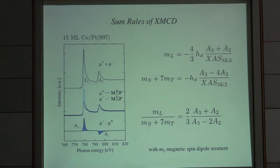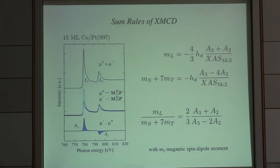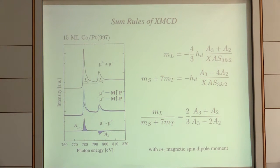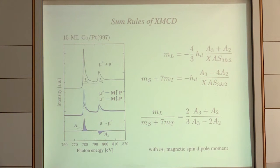If you have a theoretician who can calculate the number of d-holes, you have your orbital moment. If you want to be independent, you divide the two equations and get a ratio between the orbital and spin moment from the areas alone. You can then ask a theoretical group to calculate the spin moment, or measure it with spin excitation spectroscopy with the STM. Once you know the spin moment and have measured this ratio, you know the orbital moment.